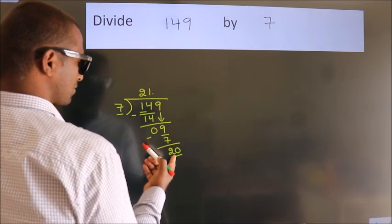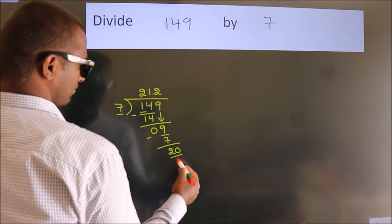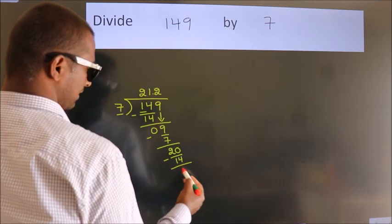A number close to 20 in 7 table is 7 twos, 14. Now we subtract. We get 6.